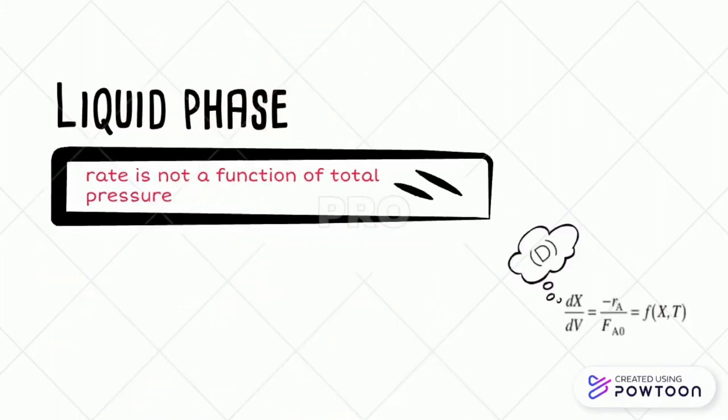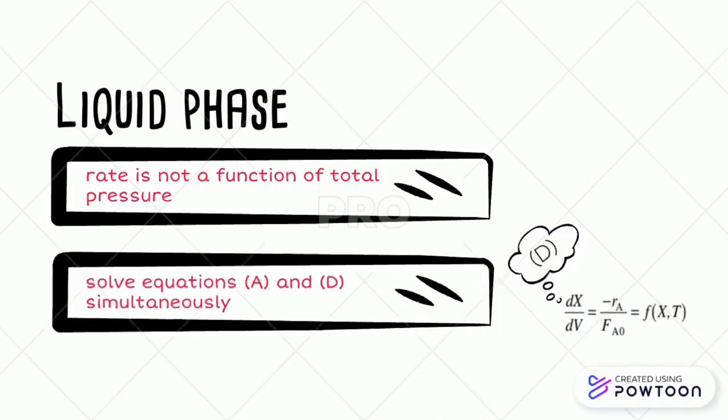For the liquid phase, the rate is not a function of total pressure as the effect of pressure on liquid is negligible, as shown in the mole balance equation D. Consequently, we need to solve equations A and D simultaneously. We can continue from the algorithm we learned from previous chapters and just add the energy balance to it.